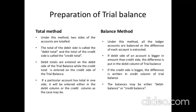Under the total method, both sides of accounts are totaled. Under the balance method, ledger accounts are not totaled but their totals are simply taken from the accounts to the trial balance. The total of the debit side is called the debit total and the credit side total is the credit total — the difference is the balance. If the debit side is bigger, it is called a debit balance; if the credit side is bigger, it is a credit balance. In the balance method, only one side is taken into consideration; in the total method, both sides are taken. If both sides are equal, that account is considered closed and not carried forward in the trial balance.